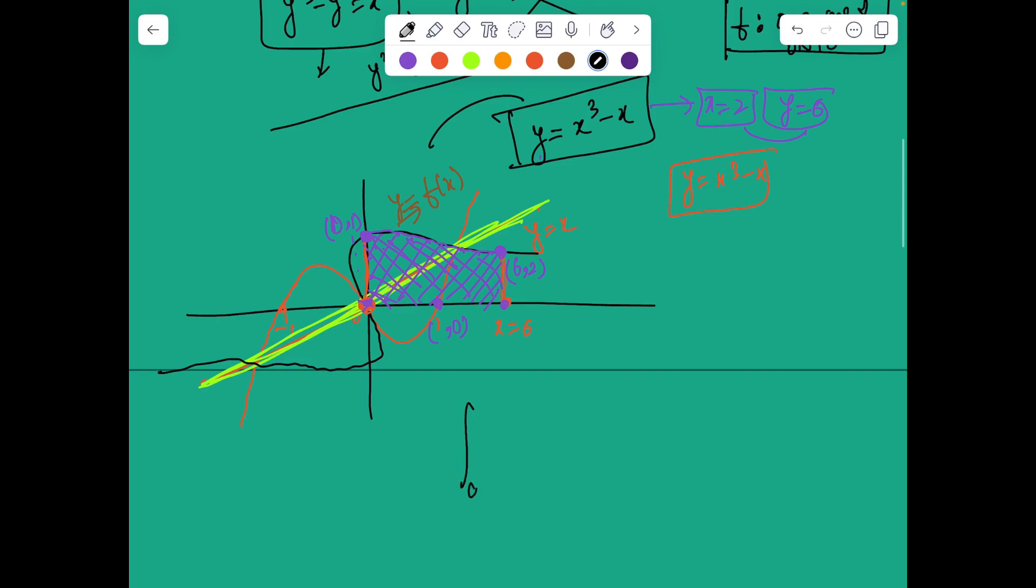So now we know 0 to 6 f of x dx. In this chunk it's behaving like a function because it's one-one and monotonic. And plus, now of course you can create a bijection only for this chunk.